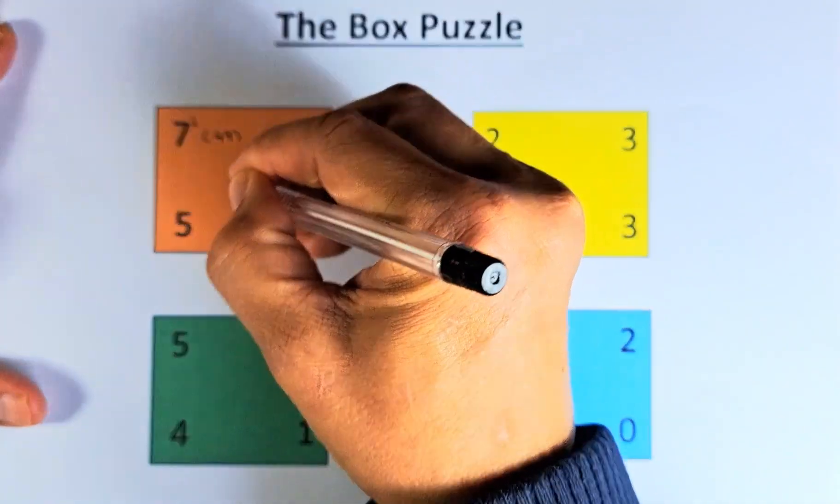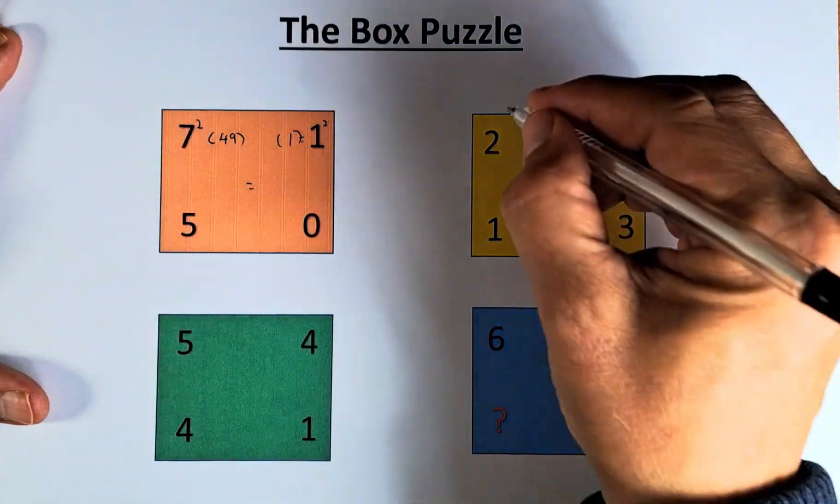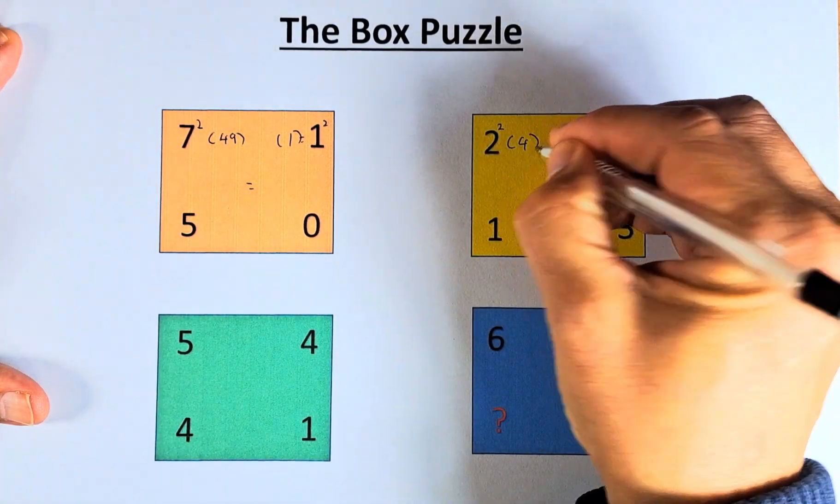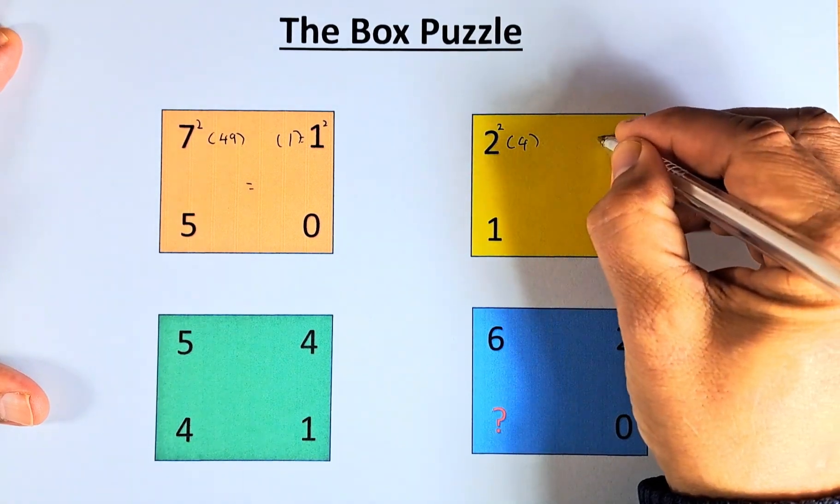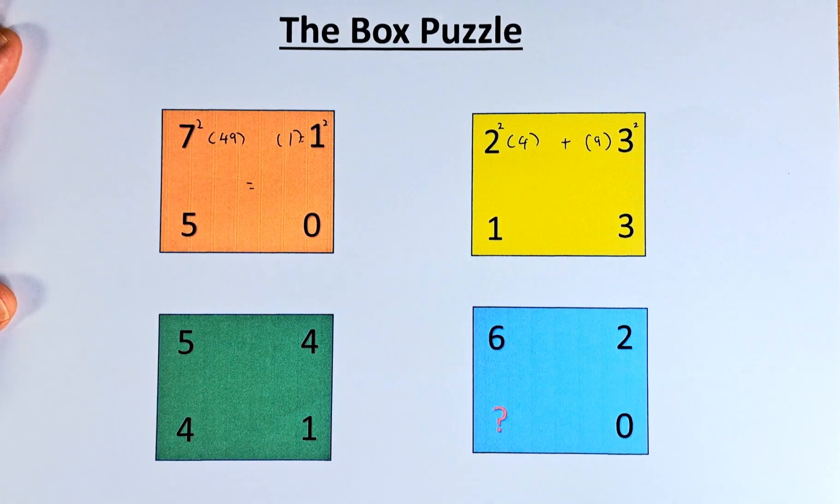So 49 plus 1 equals 50. In the yellow box, 2 squared equals 4, 3 squared equals 9, so 4 plus 9 gives us 13.